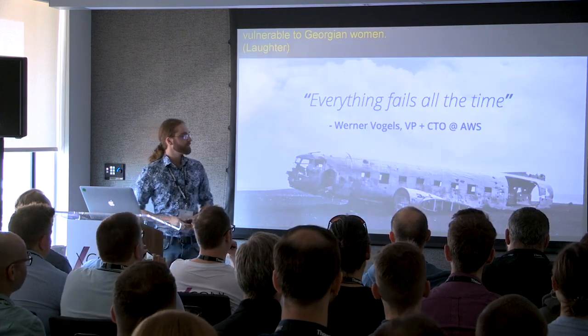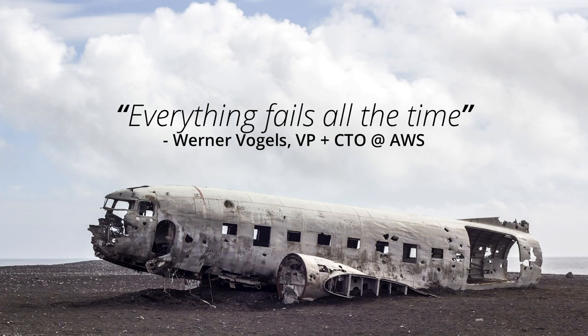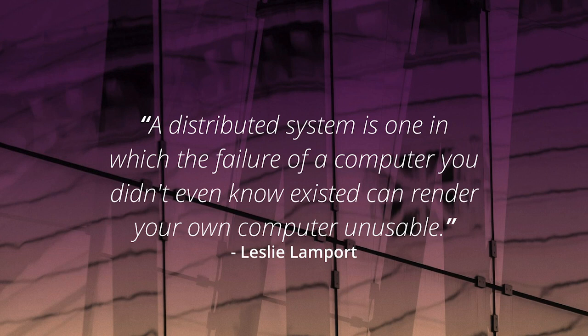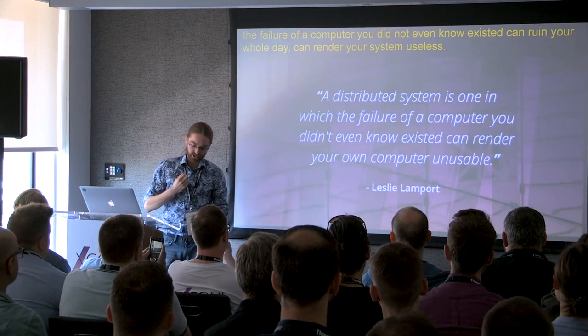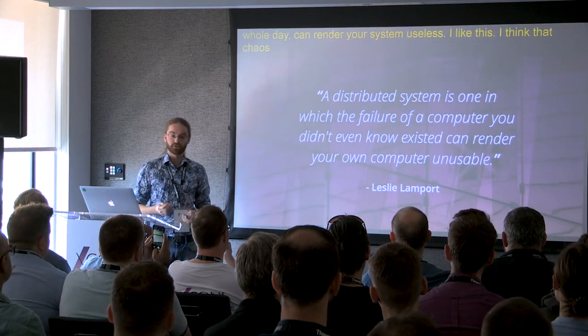This is the world we live in, where everything fails all of the time. This is Werner Vogels—the guy trying to sell you AWS—and even he admits that everything fails all of the time. That's quite honest, I like that. The reality of the world we live in is that the failure of a computer you did not even know existed can ruin your whole day, can render your system useless. I like this. I think chaos engineering at its core is a very honest approach to engineering. It is honest about the world in which we live.